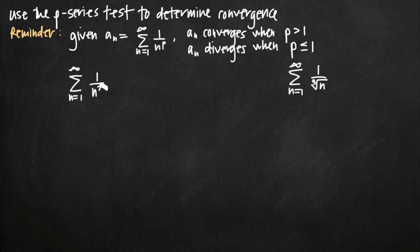Now the p-series test is one of the easiest convergence tests. It tells us that if we have some series in the form 1 over n raised to the power of p, then this series will converge whenever p is greater than 1. The series will diverge whenever p is less than or equal to 1.